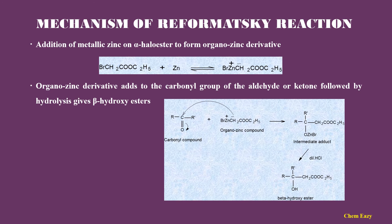You can see the example: in the carbonyl compound, the electron pair shifts to oxygen — it gets a negative charge and the carbon atom gets a positive charge. In the organo-zinc compound, the negatively charged carbon atom is added to the positively charged carbon atom of the carbonyl group and gives an intermediate adduct. This intermediate adduct on hydrolysis produces beta-hydroxy ester.